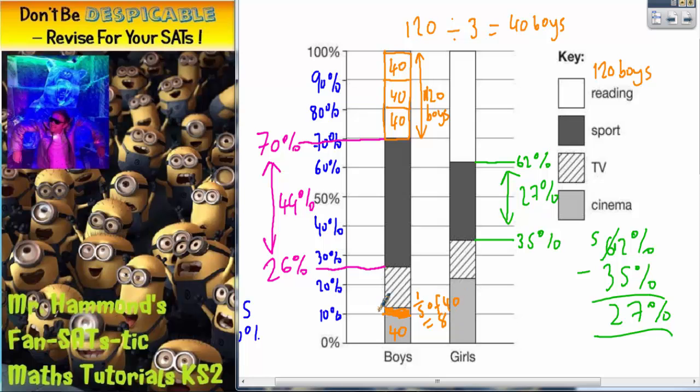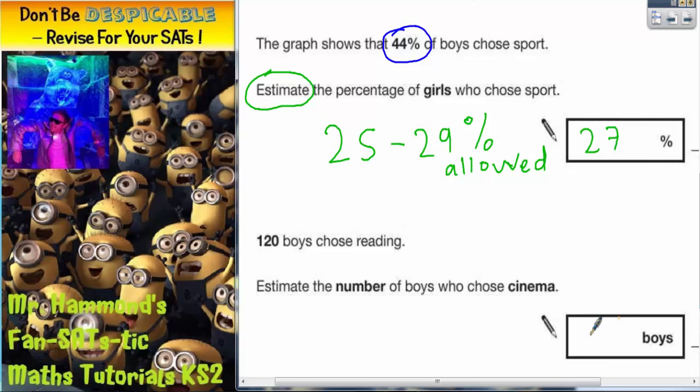So, basically what we're saying is this grey bit here is about 40, and this orange bit here that I've just shaded in is about 8. Put the two together, you've got 48. So, that would be a good estimate of the amount of boys, about 48.